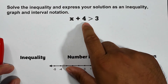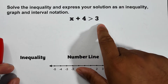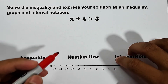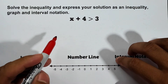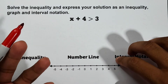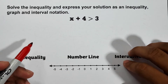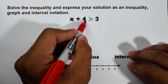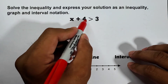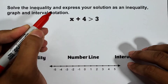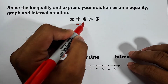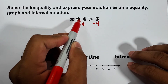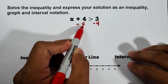Let's start with the first example. We have x plus 4 is greater than 3. This is fairly easy — about two steps. We will use the properties of inequality. Since we have plus 4, to eliminate it on the left side, I will subtract both sides by 4. Positive 4 plus negative 4...